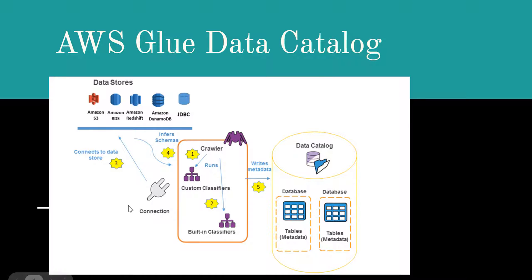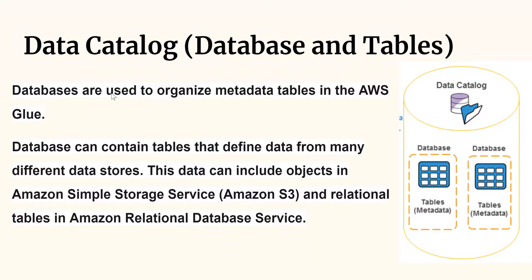Let's understand each concept — crawler, data catalog, classifiers, and connections — in detail. The Data Catalog is nothing but databases and tables in AWS Glue. A database is a collection of tables, and whenever you create a table you associate it with a particular database in Glue. One important thing to note: this is not a physical database where data is stored. The data still sits in your external data source — S3, Amazon RDS, Redshift, etc. — and here we are just defining the metadata. All tables created in Glue are external tables.